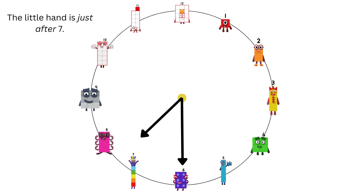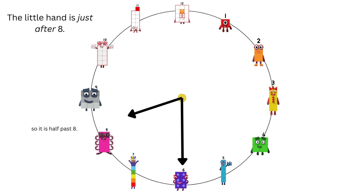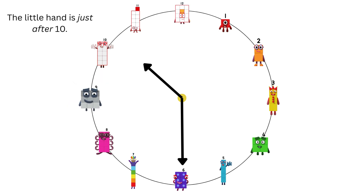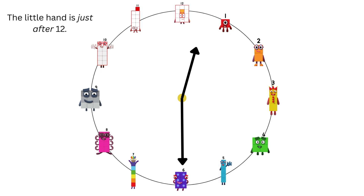The little hand is just after seven, so it is half past seven. The little hand is just after nine, so it is half past nine. The little hand is just after ten, so it is half past ten. The little hand is just after twelve, so it is half past twelve.